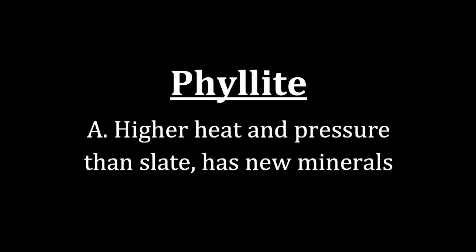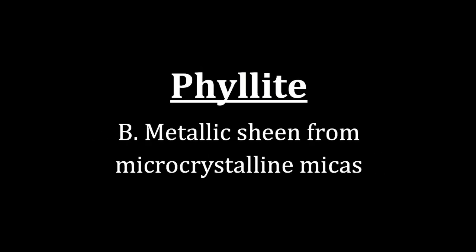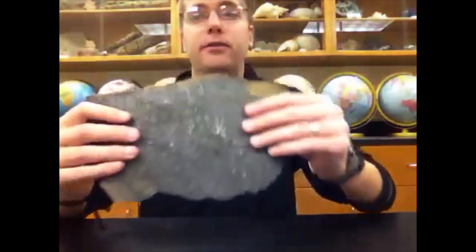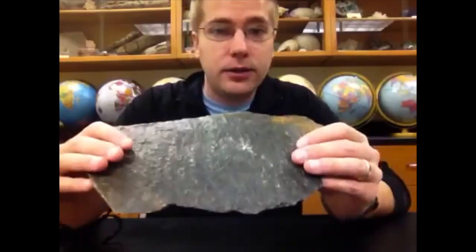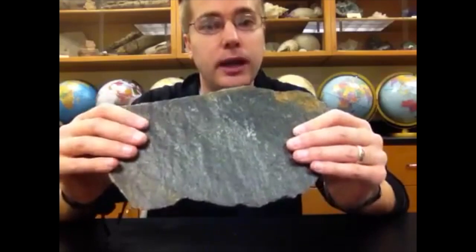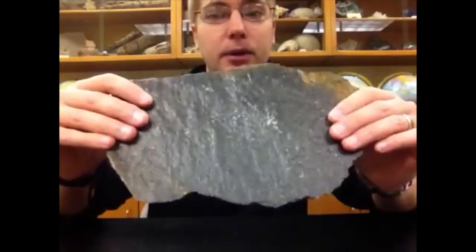The second foliated metamorphic rock is phyllite. Phyllite has higher heat and pressure than slate, still typically in the low grade, and has new minerals in the metamorphic rock that were not present in the protolith. When we look at phyllite, we see what is often referred to as a metallic sheen from microcrystalline micas. If your protolith is a shale, micas are not in that shale, but in phyllite we've gone through neocrystallization — making brand new minerals with new chemistry and new internal crystal structure not present in the protolith.